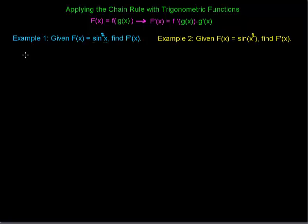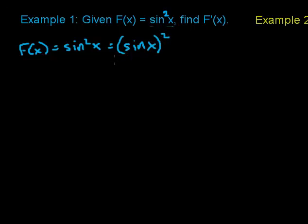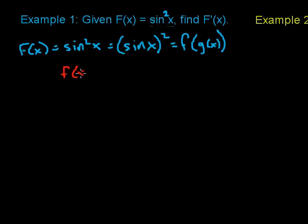In example one, let's take a look at our given function. f of x equals sine squared of x, which can be rewritten as the sine of x, all squared. This turns out to be the composition of two functions, f of g of x, where f of x is the function x squared, and g of x is the sine of x.